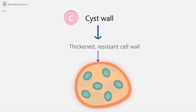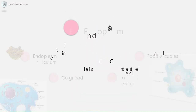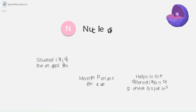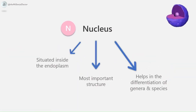Endoplasm contains four structures: endoplasmic reticulum, Golgi bodies, contractile vacuoles, and food vacuoles. Contractile vacuoles also help in the regulation of osmotic pressure. Several food vacuoles may be seen inside the endoplasm. The nucleus is situated inside the endoplasm and is the most important structure, as it controls various functions and regulates reproduction.